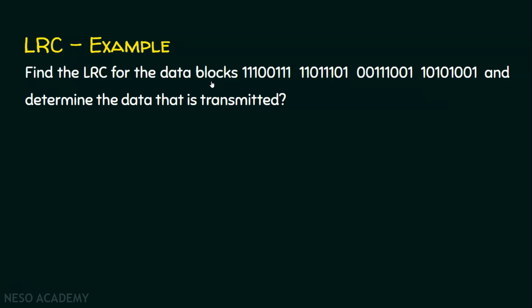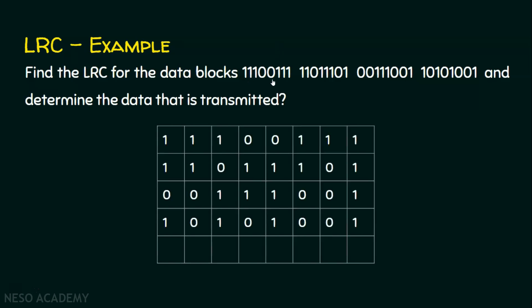Let's see an example. Find the LRC for the given data blocks — four data blocks are given — and determine the data that is transmitted. We are required to find the LRC, that is the redundant bits, and determine the data transmitted to the receiver. In LRC, the data is placed in rows and columns. The first data block is placed in the first row, the second in the second row, and similarly the third and fourth data blocks are placed in the third and fourth rows respectively.